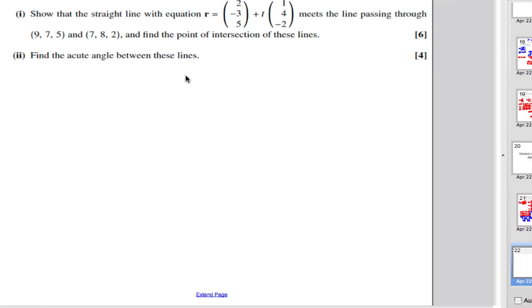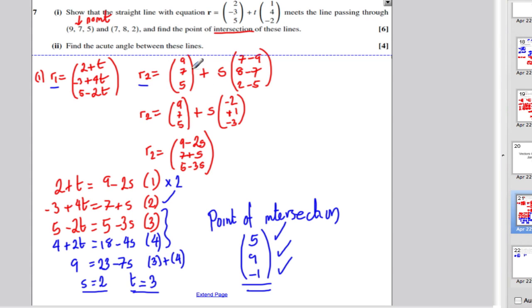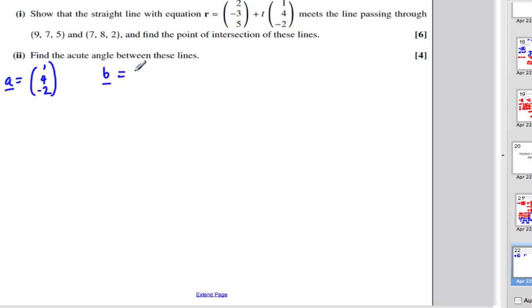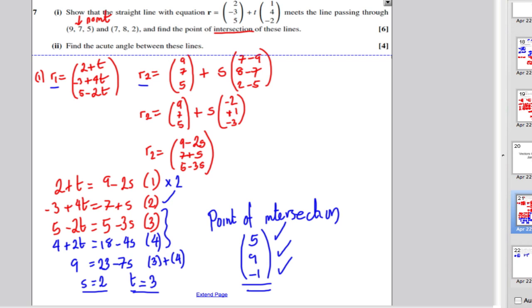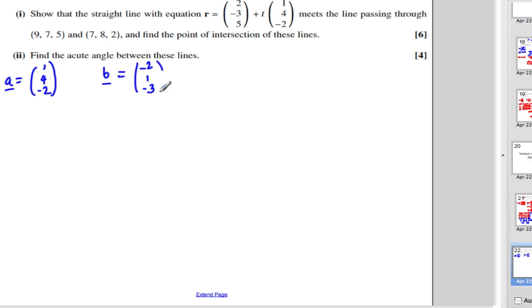And now it asks us to work out the acute angle between these two lines. Now remember, when doing this, all I care about is the direction components of the equations of the line, and working out the dot product of them. So I'm going to let a be this direction of line 1, which is 1, 4, minus 2, and I'm going to let b be the direction of line 2, which I worked out previously, the direction of line 2 was minus 2, 1, minus 3.